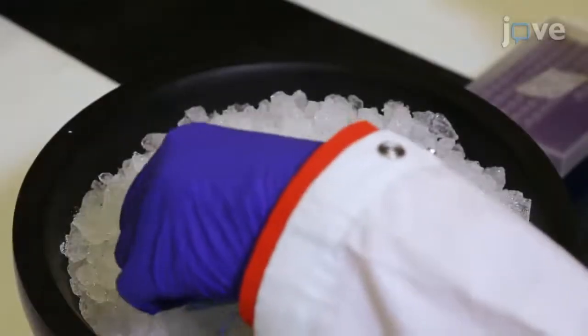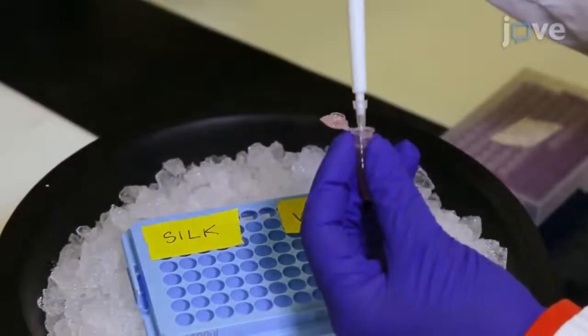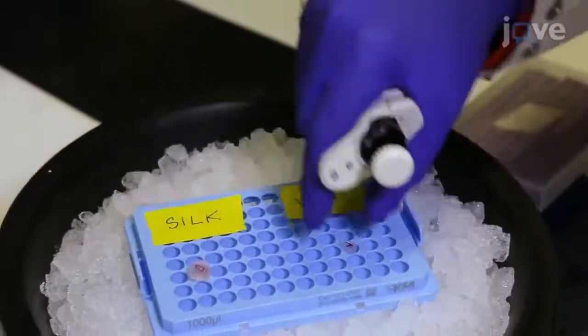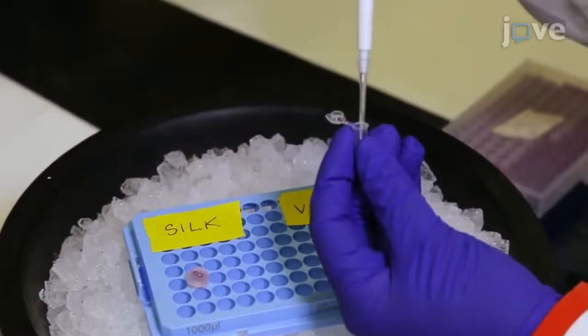First, mix thawed AAV and 5-7.5% aqueous silk fibroin in a 1-to-1 ratio in a 200 µL PCR tube. Gently pipette the solution in and out several times to thoroughly mix the AAV and fibroin.